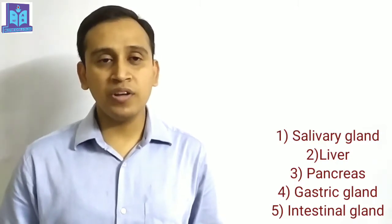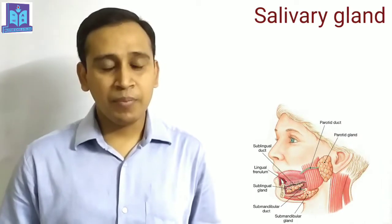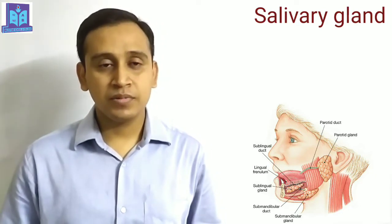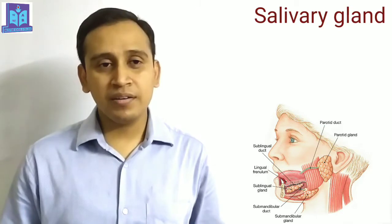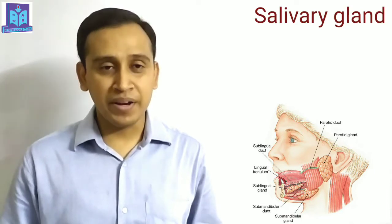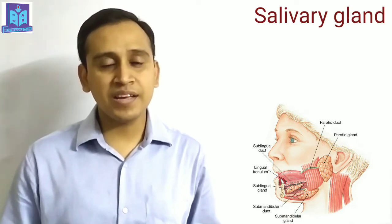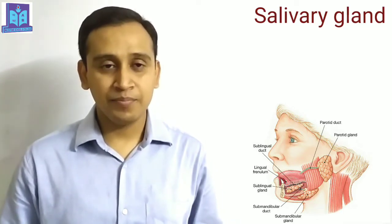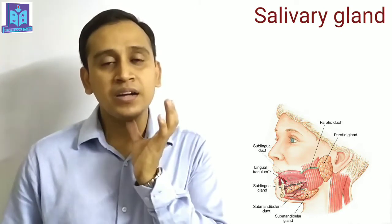In today's class, we will discuss salivary gland, pancreas, and gastric gland. First, salivary gland. There are three pairs of salivary gland present in both sides of the buccal cavity. Number one, parotid gland — one pair is located just in front of both ears. Number two, submandibular gland — located just beneath the lower jaw. Number three, sublingual gland — located just beneath the tongue.